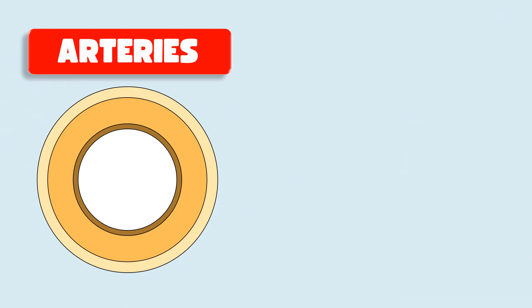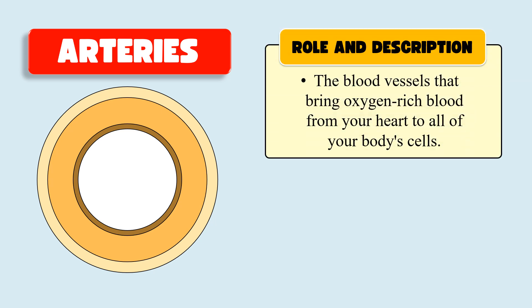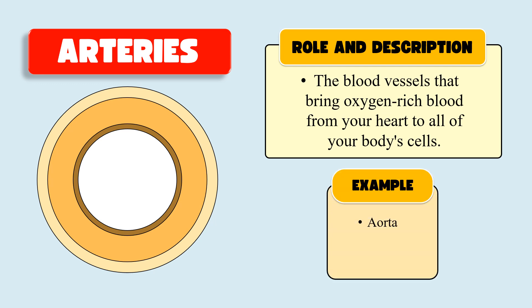First, arteries. These blood vessels carry the blood away from the heart — you can say they supply the blood to the whole body, transferring blood from the heart to the complete body. Generally they carry the oxygen-rich blood. An example of this artery includes the aorta, which is a big artery present on the heart and which supplies blood to the complete body.